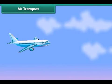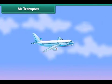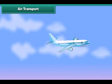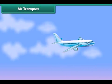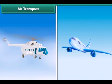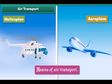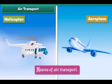Air transport is the movement of goods and passengers from one place to another through air. The vehicles carrying goods and passengers through air, such as helicopters and aeroplanes, are called means of air transport. Air transport is the fastest mode of transport.